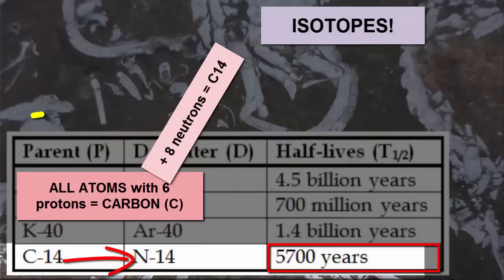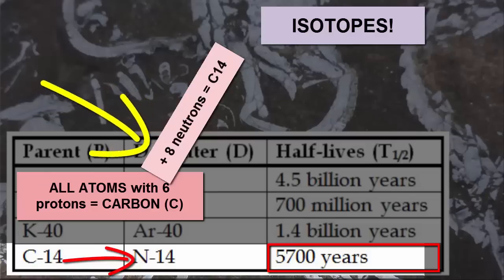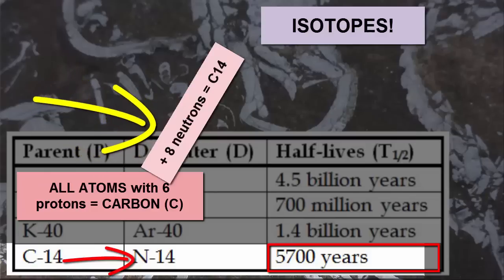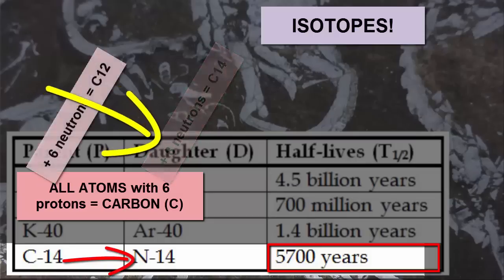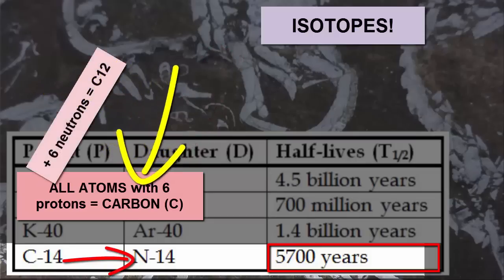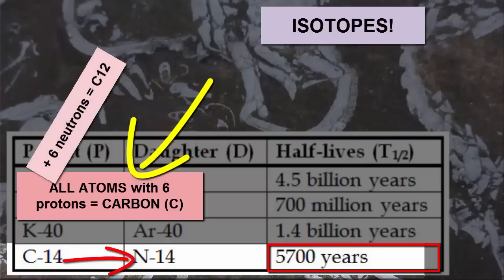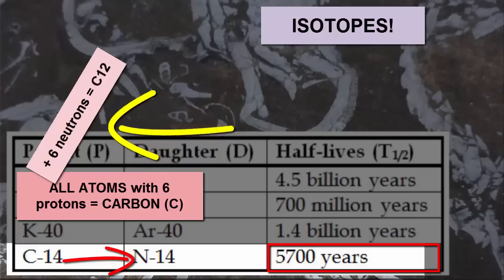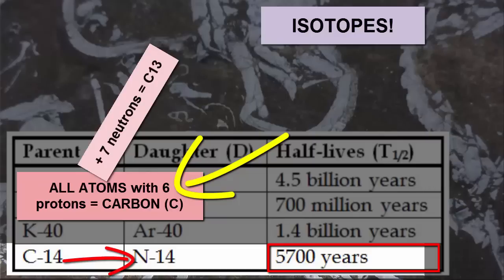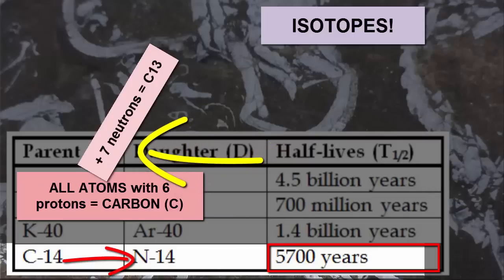Carbon-14 is a carbon isotope with 6 protons and 8 neutrons — total 14. Carbon-12 is a carbon isotope with 6 protons and 6 neutrons — total 12. Carbon-13 is a carbon isotope with 6 protons and 7 neutrons — total 13.